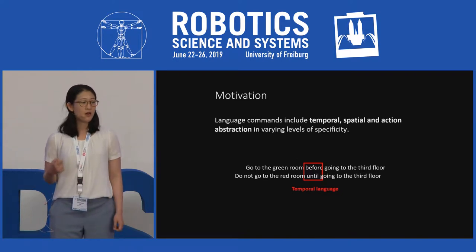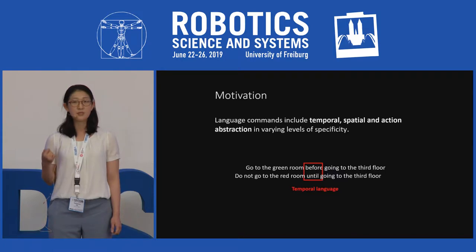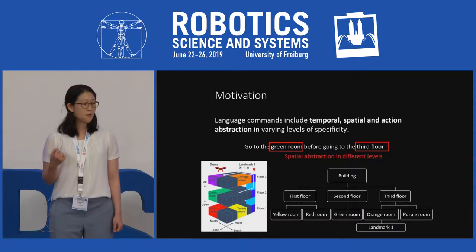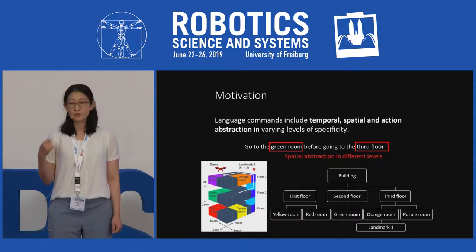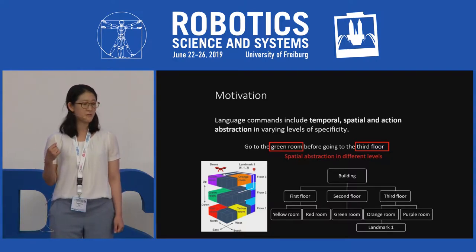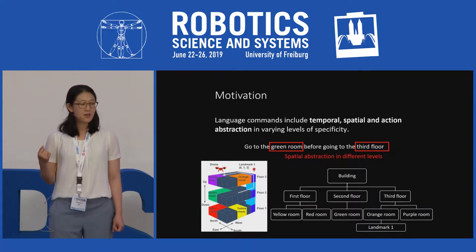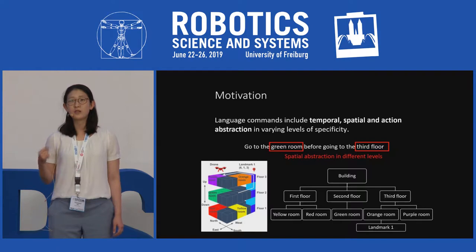Language commands can also include spatial abstraction at different levels. For example, in this building there are some floors, and each floor consists of many rooms, and rooms consist of many cells, and a landmark occupies only one cell. Using this kind of abstraction, we can improve the planning efficiency dramatically.